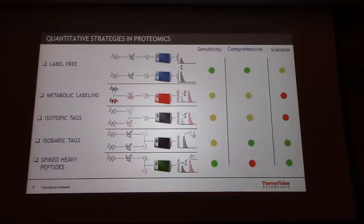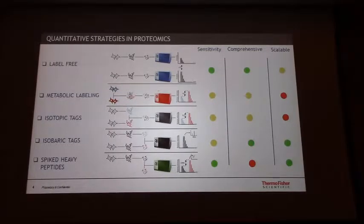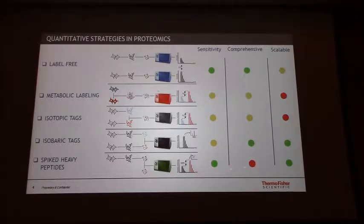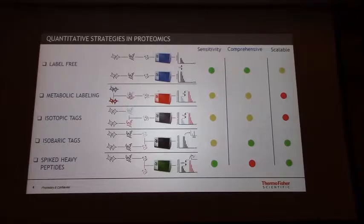With TMT, for example, you get a lot of samples per run — about 10 samples per run — and you get a very comprehensive view of the proteome, but you lose a little bit of sensitivity. Then you can go with more targeted approaches where you use spiked heavy peptides, where you can get very high sensitivity but you only get a few targets. At the same time, you can run very fast analysis and many runs per day.